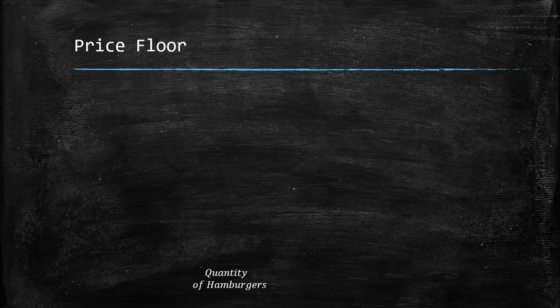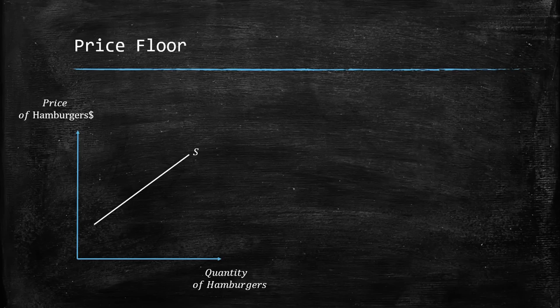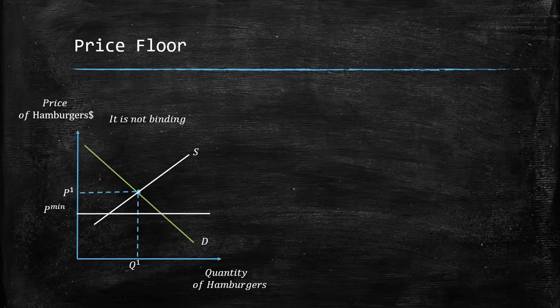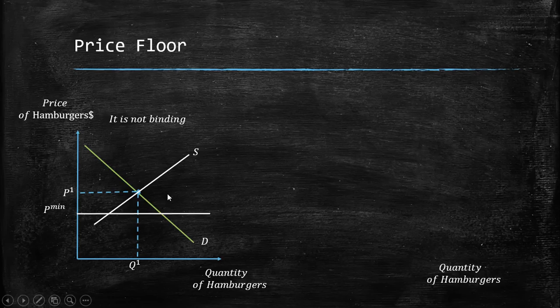The other case is the price floor — the minimum price — which in most cases is associated with the minimum wage. The first case is the non-binding price floor, which is the opposite: it is where the minimum price is below the equilibrium, so suppliers are going to charge the equilibrium price and there is no change in the market.